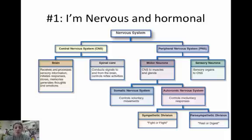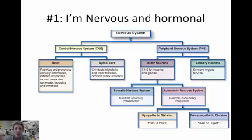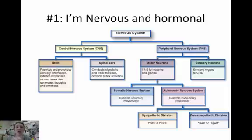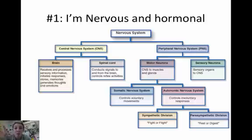Pay attention to the difference between not just the nervous system and the endocrine system, but the breakdown of the nervous system. This comes up over and over again — in therapy, in fear and emotions, motivation and emotion. The nervous system breaks down into two main parts: the central, which is your spinal cord and brain, and the peripheral, which is on the periphery — the PNS.